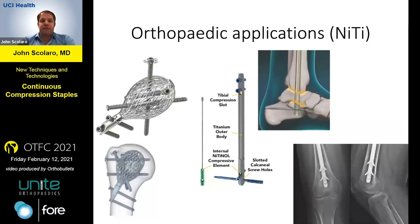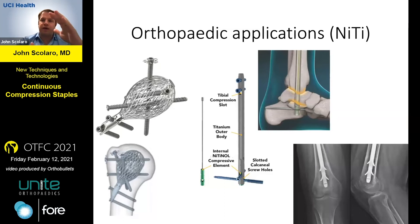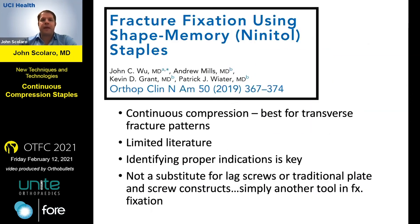There are now all sorts of devices that incorporate nitinol. Many of you are probably familiar with proximal humerus, distal radius, and proximal radial cage constructs. There are intramedullary hindfoot nails with a pre-loaded nitinol wire to create continuous compression across an osteotomy or fusion site. There's also an intramedullary nail with nitinol wings or pegs that deploy to create an interlocking interface, essentially replacing the interlocking bolts — which is pretty wild.